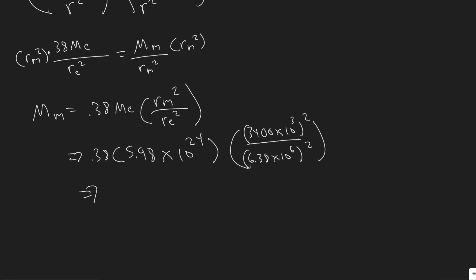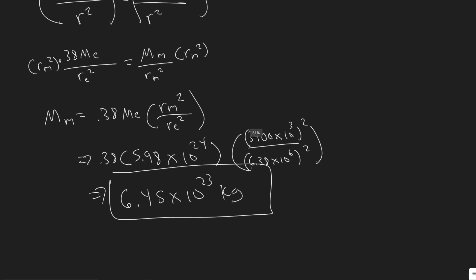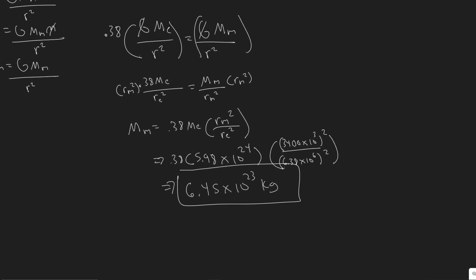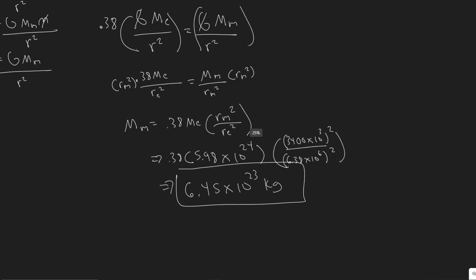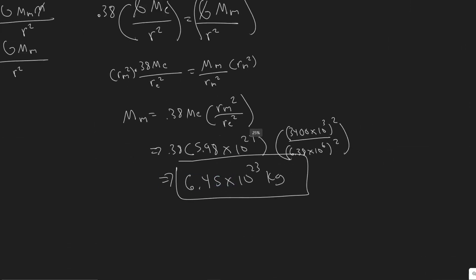The answer is 6.45 times 10 to the 23 kilograms. Checking on Google, the actual mass of Mars is 6.39 times 10 to the 23 kilograms — basically the same. Our answer is slightly rounded because we didn't use exact values, so theirs is a little more accurate, but they're essentially the same.